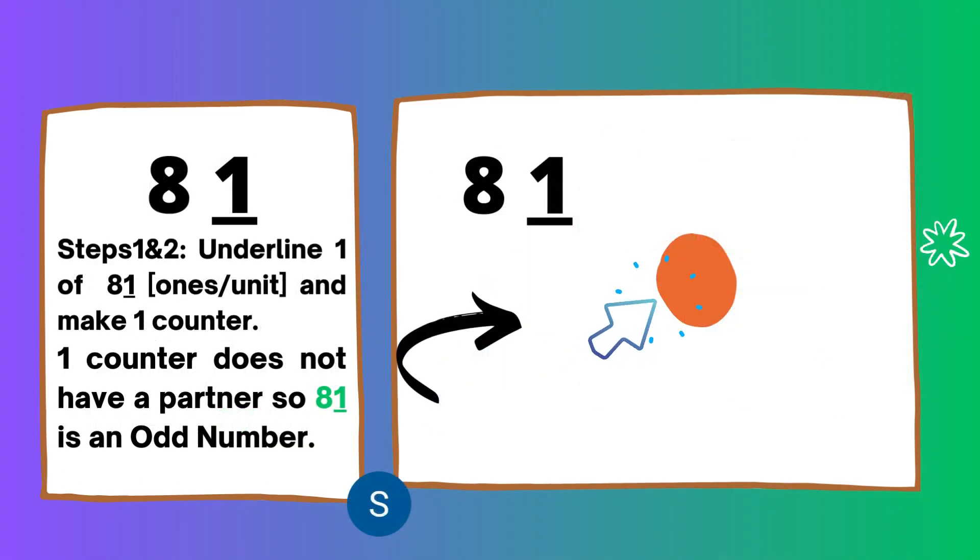In case we have a number that has 1 as the unit, what will happen with it? Here we have 81, so we have drawn one counter. Because one counter is alone and does not have a friend, 81 will be considered an odd number.